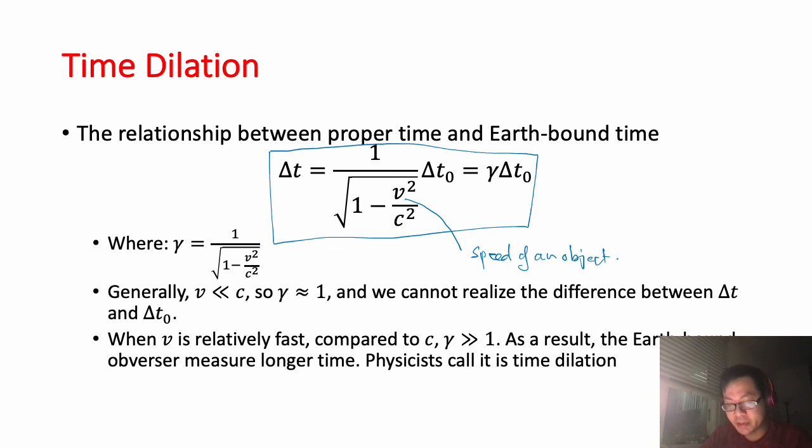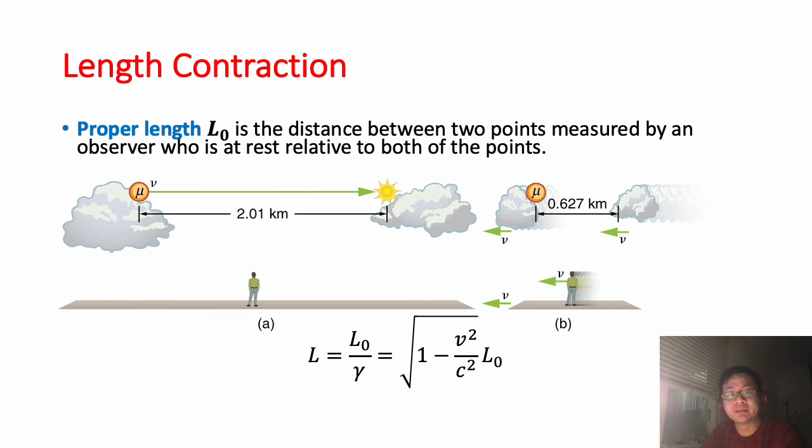But if someone or something can have a speed relatively fast compared to the speed of light, then gamma will be larger than one. And as a result, the Earth-bound observer measures longer time compared to the observer at rest with the object. And physicists call this time dilation.